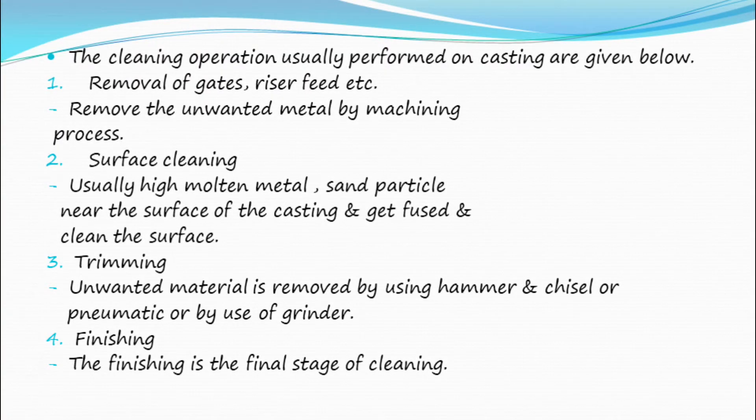The cleaning operations usually performed on castings include: removal of gates, risers, and feed metal; removal of unwanted metal by machining; surface cleaning — usually high molten metal and sand particles near the surface of the casting get fused and the surface must be cleaned; trimming — unwanted material is removed using a hammer and chisel, or pneumatically or by use of a grinder; and finishing, which is the final stage of cleaning.